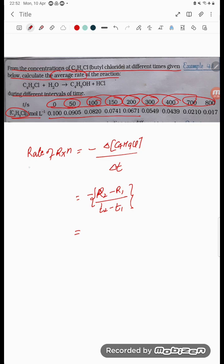What is R2? We are considering the rate of reaction during interval 0 to 50. This is T2 and this is T1. When the time T2 is 50, the concentration is 0.0905. When T1 is 0, the concentration is 0.100.